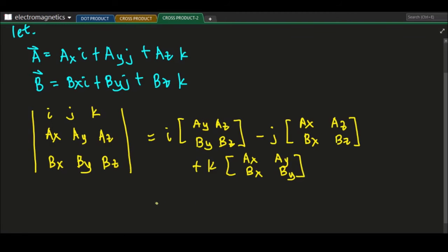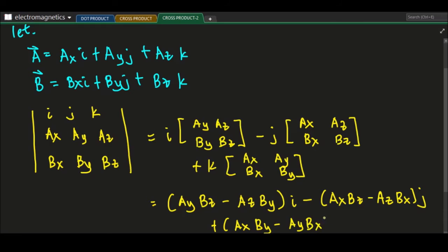Then we just get the determinants of our two by two matrix. So we have A y B z minus A z B y. So this is i minus A x B z minus A z B x. So this is j plus A x B y minus A y B x k.